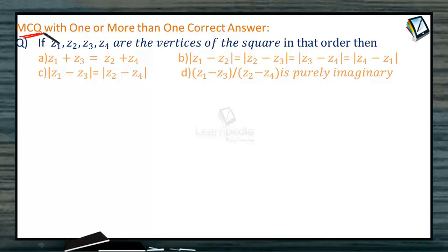Next, let us proceed to one more multiple choice question with one or more than one correct answer. If Z1, Z2, Z3, Z4 are the vertices of a square in that order, then which one among these options are correct? Let us go to the solution of this problem.